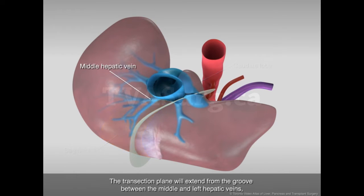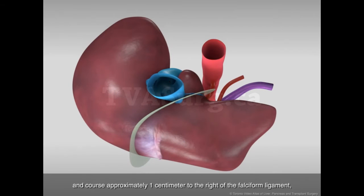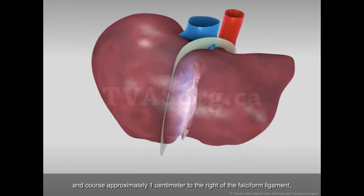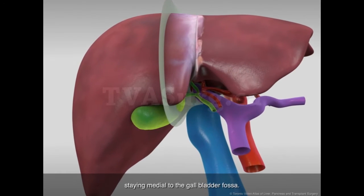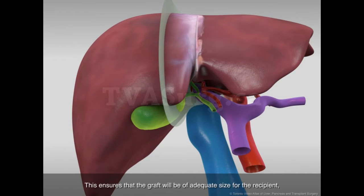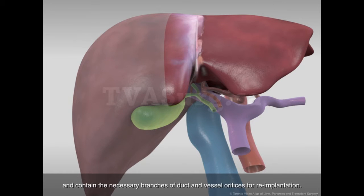The transection plane will extend from the groove between the middle and left hepatic veins, and course approximately 1 cm to the right of the falciform ligament, staying medial to the gallbladder fossa. This ensures that the graft will be of adequate size for the recipient and contain the necessary branches of duct and vessel orifices for re-implantation.